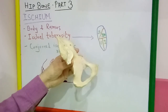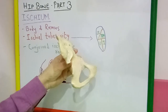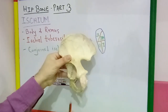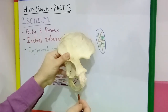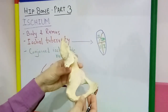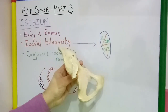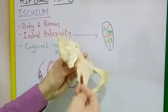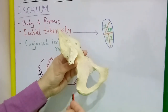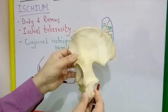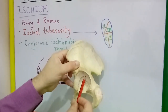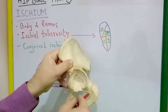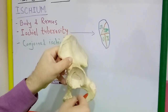Hello everyone. In this last session on hip bone, I will demonstrate the general features and attachments of the ischium. This is the left hip bone in anatomical position, in which the ischium forms the posterior inferior part of the hip bone, and also the adjoining posterior inferior two-fifths of the acetabulum and the posterior boundary of the obturator foramen.